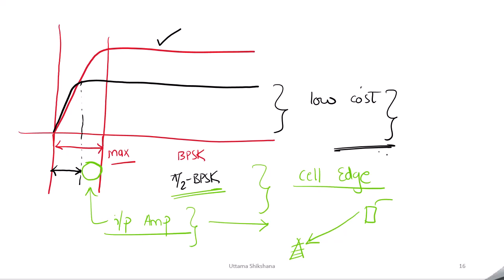Consider the cell-edge scenario where the UE is at the cell edge and wants to transmit a signal to the base station — it requires more power. In a normal BPSK system, if you try to pump in more input power, it will exceed the maximum input amplitude and enter the non-linear region. But in the case of π/2-BPSK, we can still pump in extra power without exercising the non-linearity of the power amplifier, and as a result we can transmit the signal over a longer distance, enhancing cell coverage.